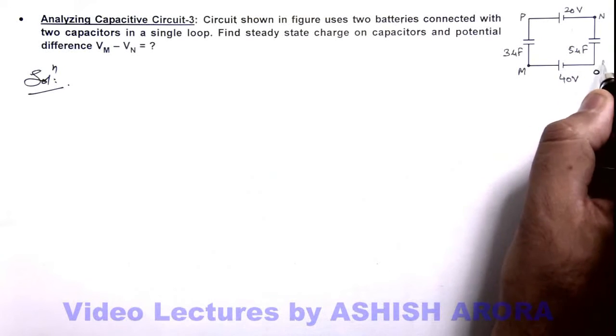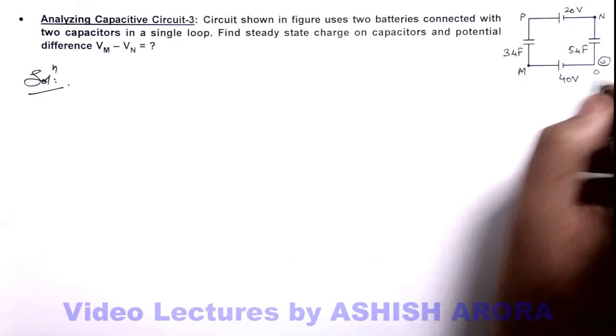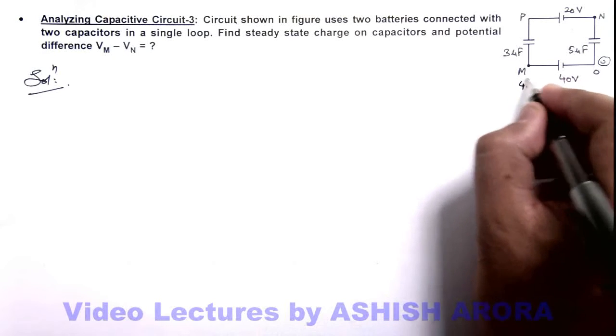Then at point M, potential will be taken as 40.